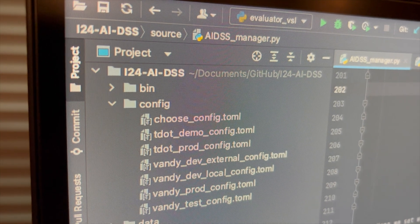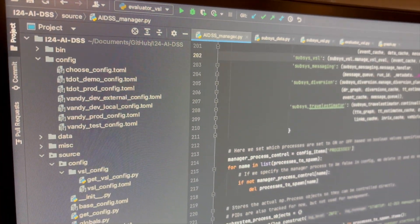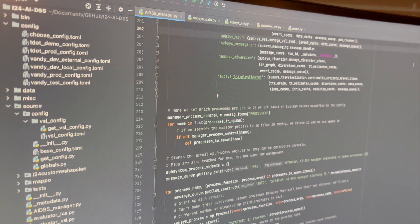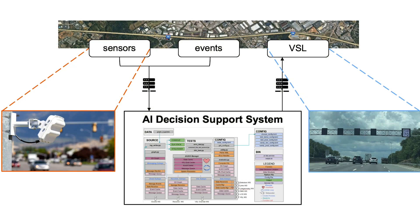The Artificial Intelligence Decision Support System, or AI DSS, is the software used to implement the decisions from AI to the field. With roadside sensors, the AI DSS is able to obtain the traffic speed, volume, and occupancy data every 30 seconds. Additionally, AI DSS acquires event information, like traffic incidents, in real-time. Based on this information, the AI will make a decision, and AI DSS will send those decisions back to the field.